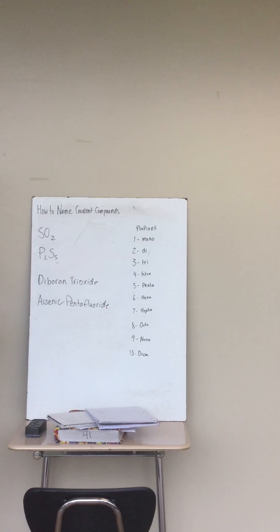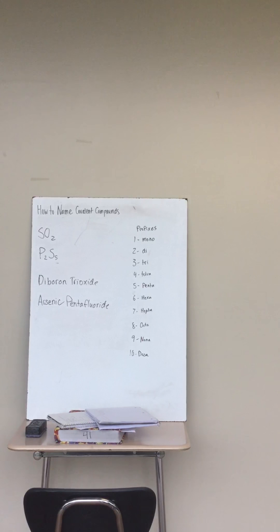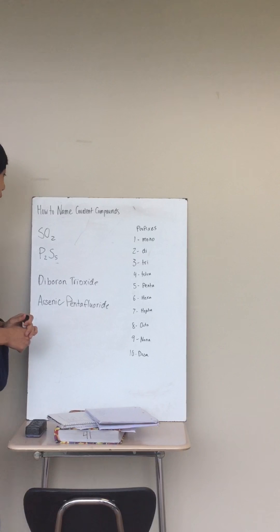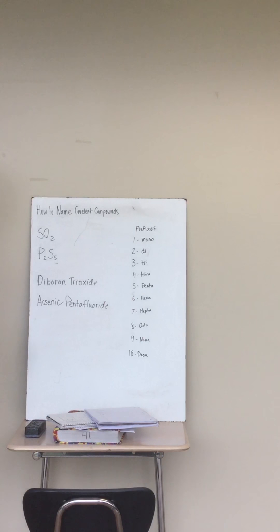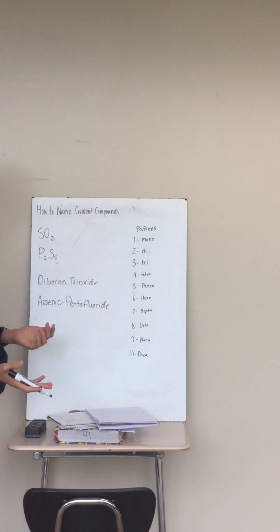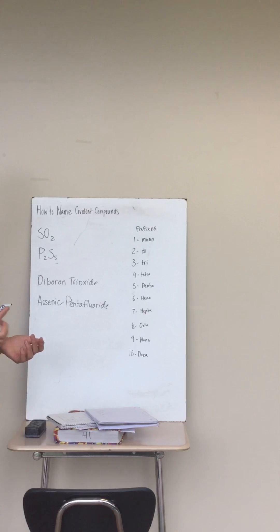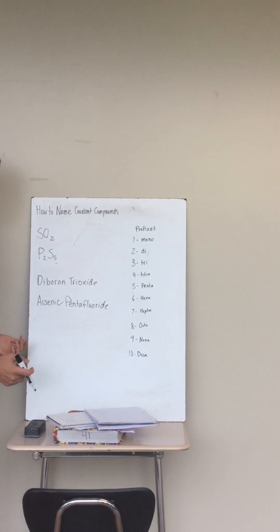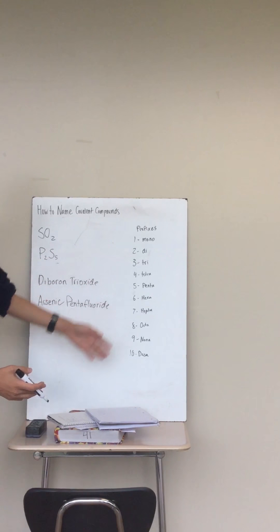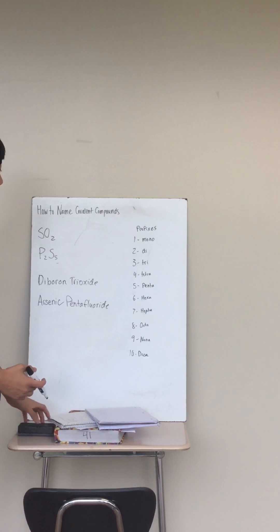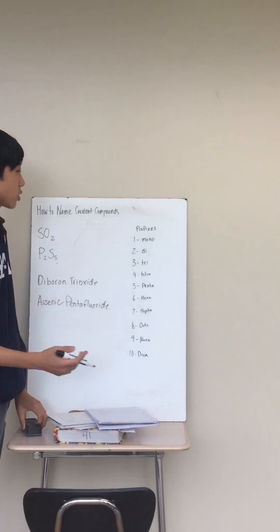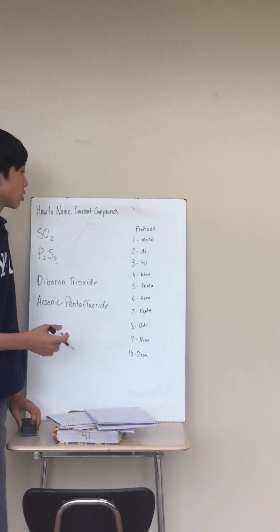Chemistry lessons with Dave! Our topic now is how to name covalent compounds. Covalent compounds are between two non-metals. On the right I have a list of prefixes which we will later use.